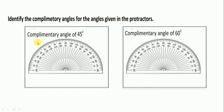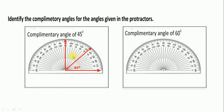Identify the complementary angles for the angle given in the protractor. Here the angle given is 45 degrees; we have to draw its complementary angle. The sum of 2 complementary angles should equal 90 degrees. We first draw a line to 0, then a line to 90 degrees, then mark 45 degrees in between 40 and 50. The bigger line indicates 45 degrees. So this one is 45 and its complementary is also 45 — the sum of these two is 90 degrees.